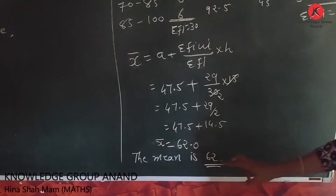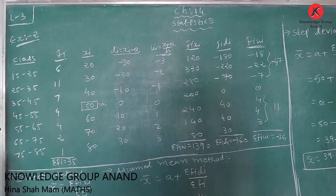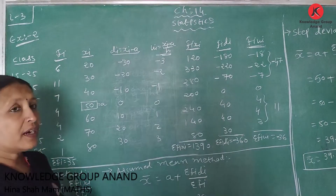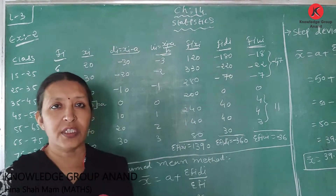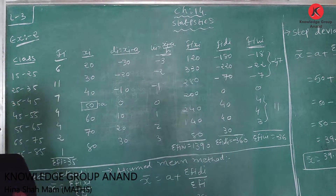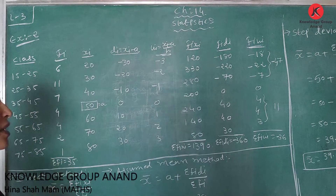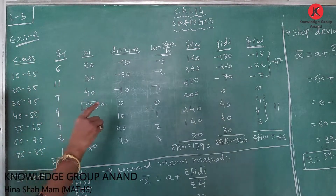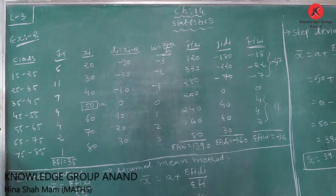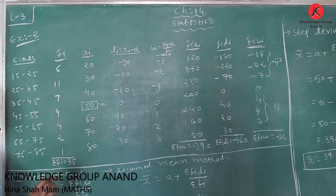We have learned three methods of mean: the direct method, assumed mean method, and step deviation method. We calculated example number 2 using all three methods. In all three methods, x̄ gives the same answer.